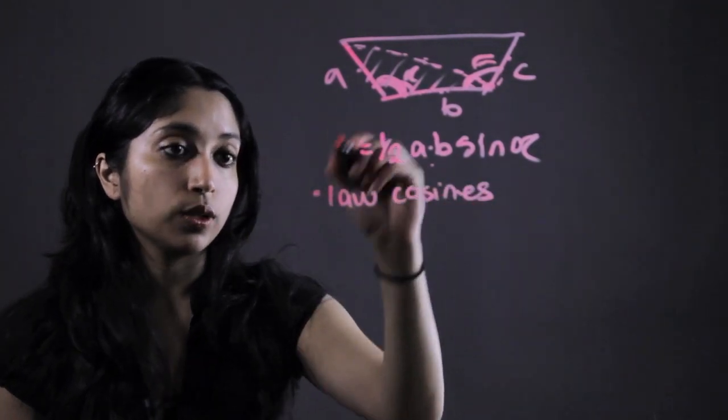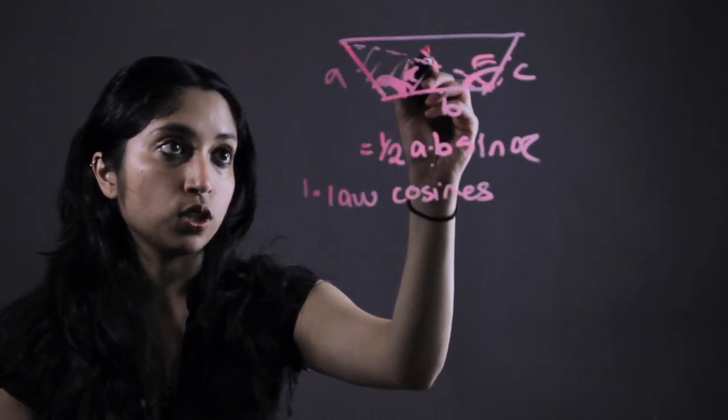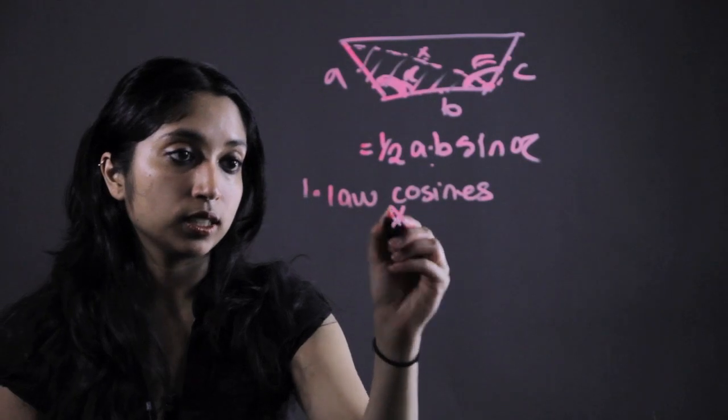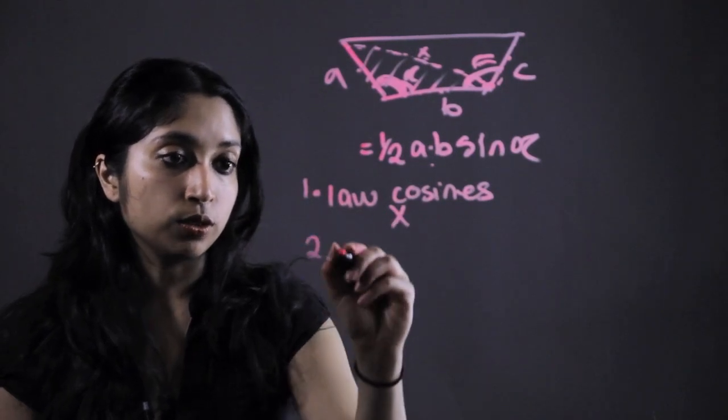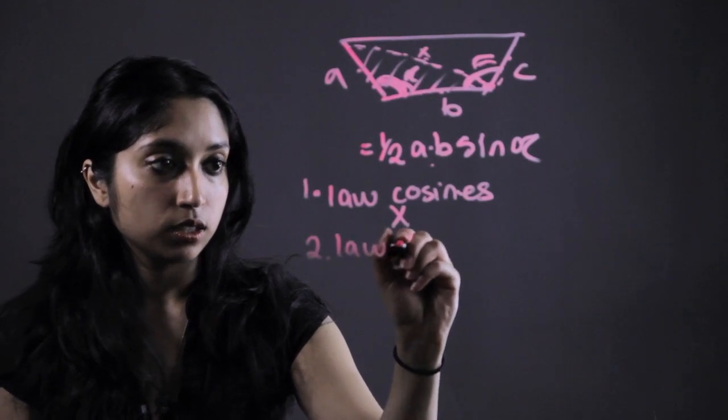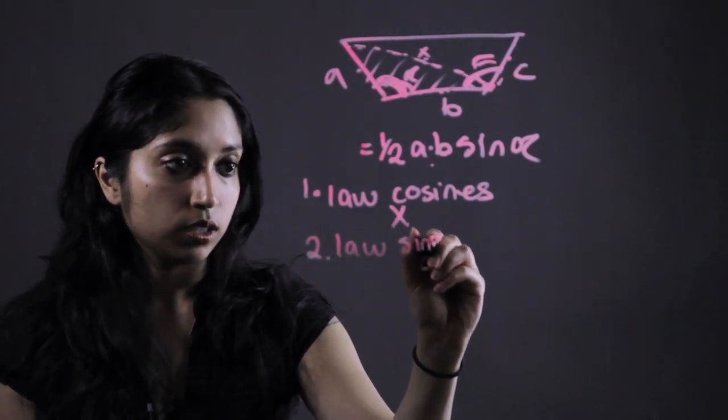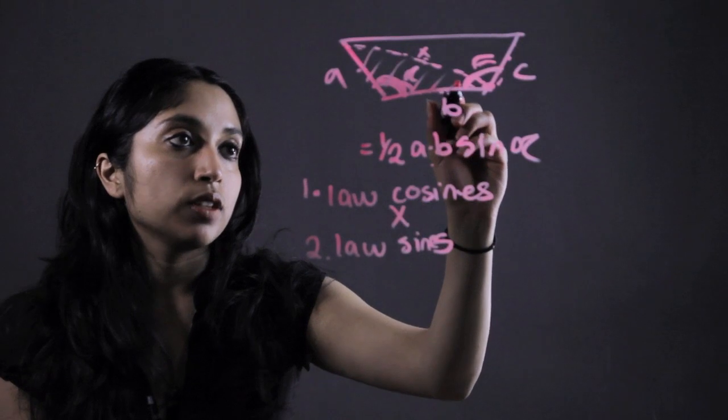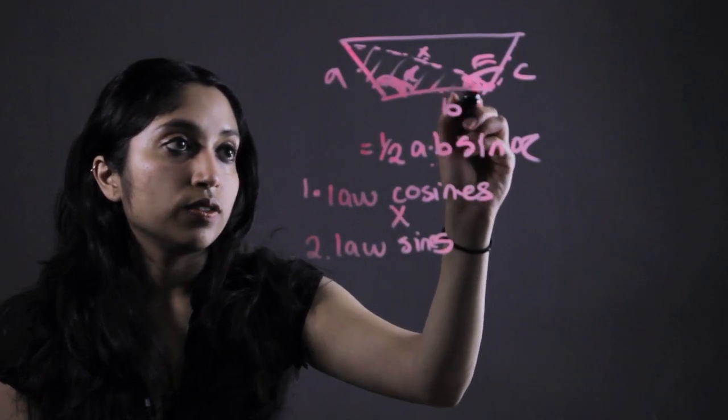So once we use the law of cosines, you can solve for this side right here, let's call it X. The second thing we're going to want to do is use the law of cosines, and that is going to give us the value of this angle.